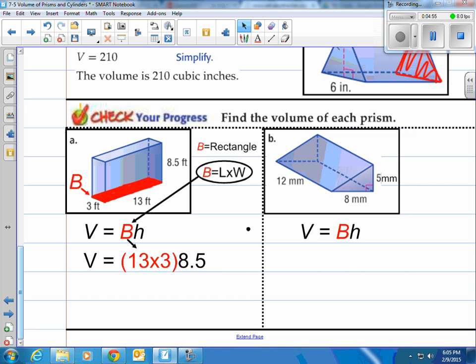The last piece is just the H. Multiply by how tall it is, or the distance between the two bases, and that is 8.5. So when you do that, you end up having 331.5 cubic feet, and that is your correct answer.